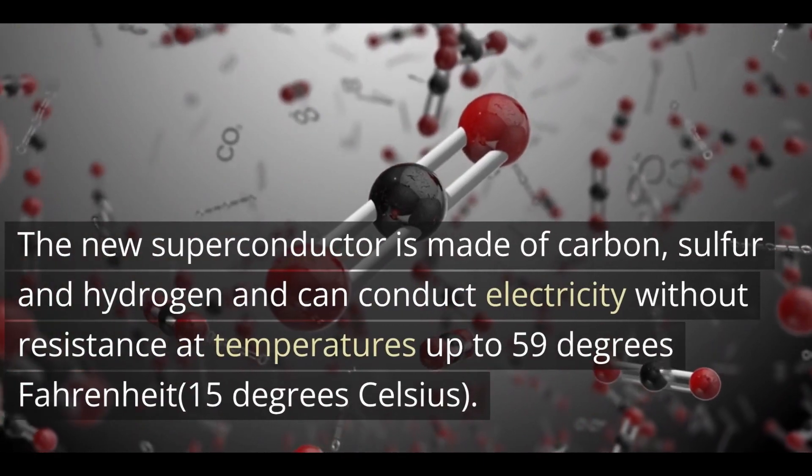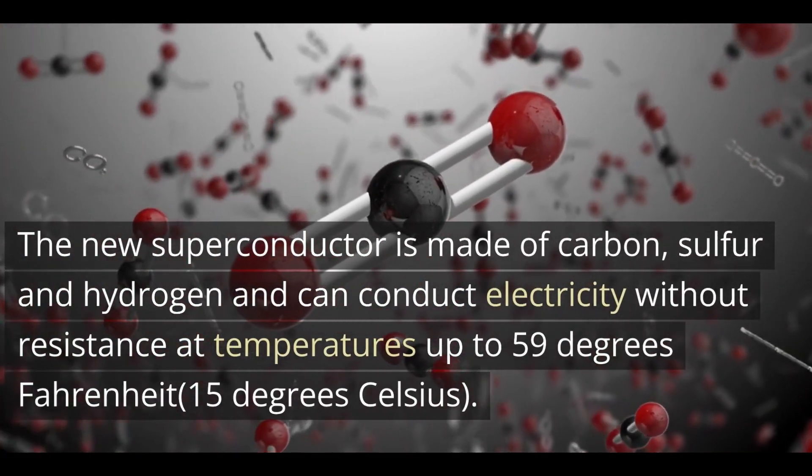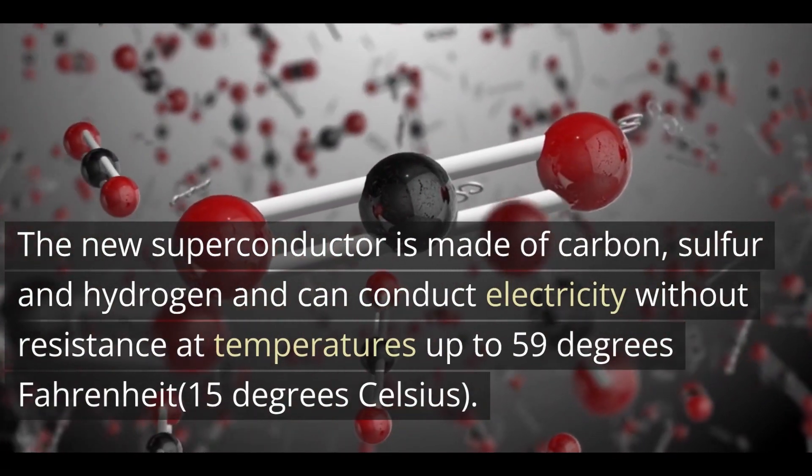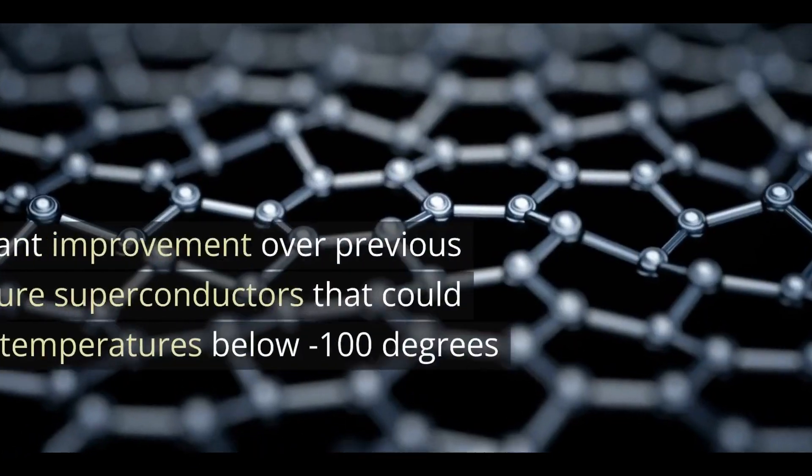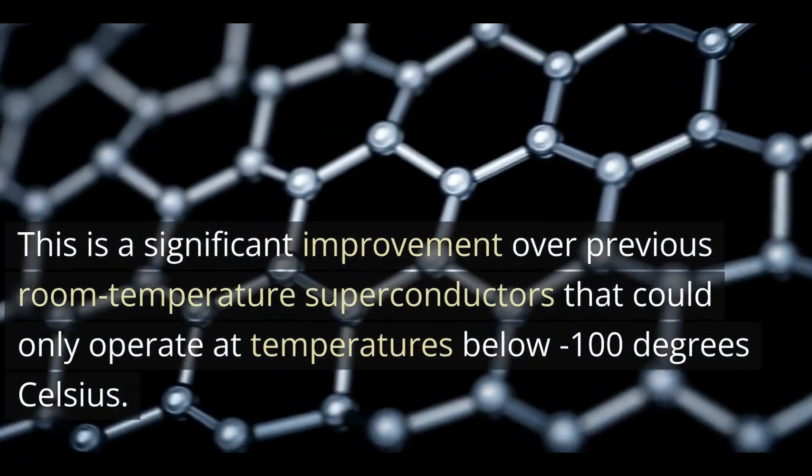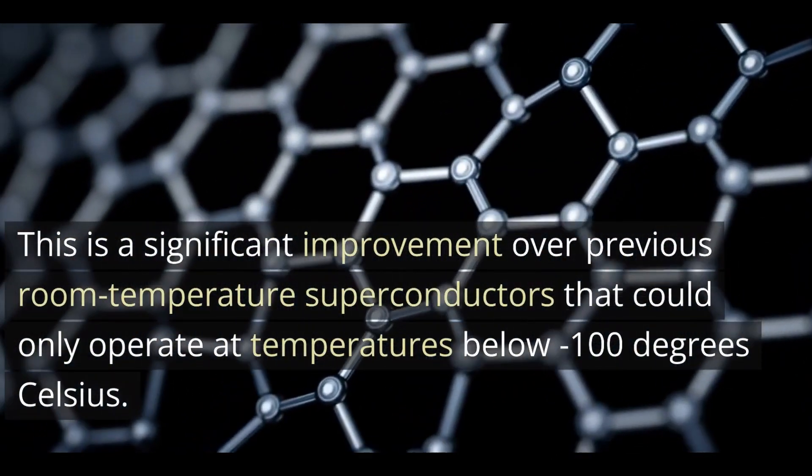The new superconductor is made of carbon, sulfur and hydrogen and can conduct electricity without resistance at temperatures up to 59 degrees Fahrenheit, 15 degrees Celsius. This is a significant improvement over previous room temperature superconductors that could only operate at temperatures below minus 100 degrees Celsius.